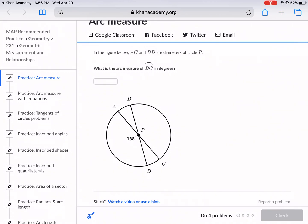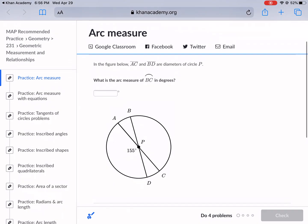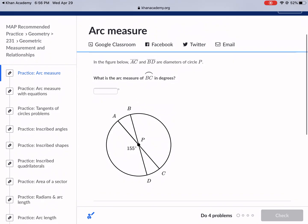Welcome back everyone to West Explains Best. We're continuing where we left off with circles and we're going to be talking about arc measure today. So this is a Khan Academy tutorial, so let's go ahead and jump right in. In the figure below, AC and BD are diameters of circle P. What is the arc measure of BC in degrees?